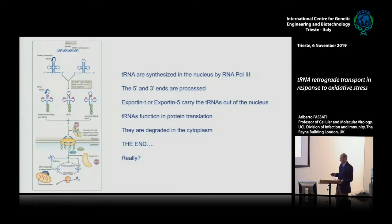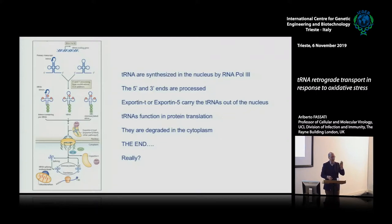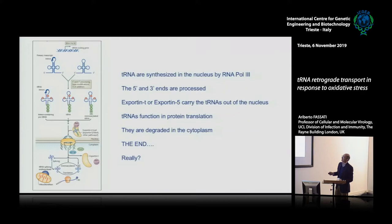tRNAs are processed — they don't come out fully formed. They are synthesized in the nucleus by RNA polymerase III, and there are many tRNA genes dispersed throughout the entire genome. We have 21 amino acids but many more tRNAs, and the same anticodon tRNA can be coded by many different genes. RNA pol III transcribes the tRNA; they are processed mostly in the nucleolus, where the 5' and 3' ends are cleaved, and the CCA tail is added by an enzyme.